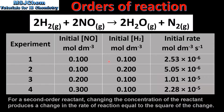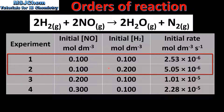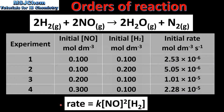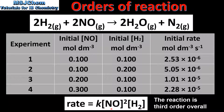Next we look at the hydrogen. If we compare experiments 1 and 2 we can see that the concentration of hydrogen has been doubled, while the concentration of nitrogen monoxide remains constant. If we compare the rate of reaction for experiments 1 and 2 we can see that the rate has doubled. So when the concentration of hydrogen is doubled the rate of reaction also doubles — therefore the reaction is first order with respect to hydrogen. At the bottom we can see our experimentally determined rate expression: second order with respect to nitrogen monoxide and first order with respect to hydrogen.